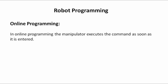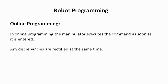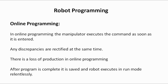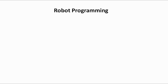In online programming, the manipulator executes the command as soon as it is entered. In this type of programming there is a loss of production, as when the programmer is writing the program the manipulator is engaged and not involved in any production process. Any discrepancies or bugs are rectified at the same time of programming. After the program is completed, it is saved and the robot executes in run mode relentlessly.